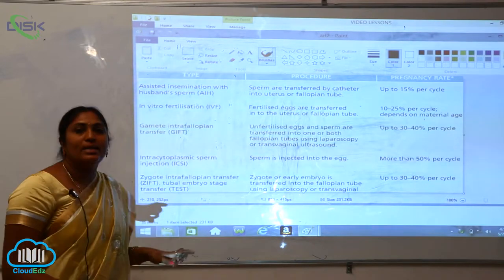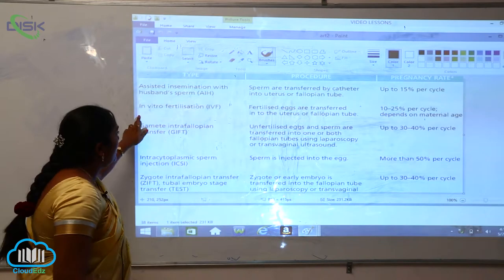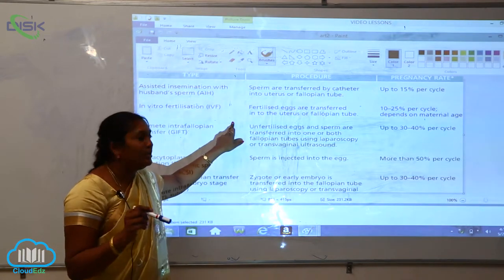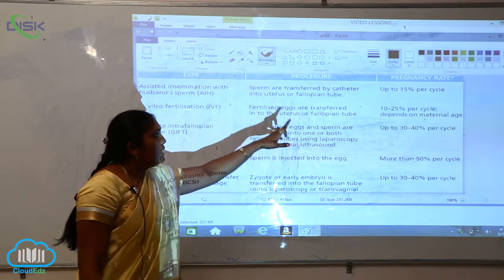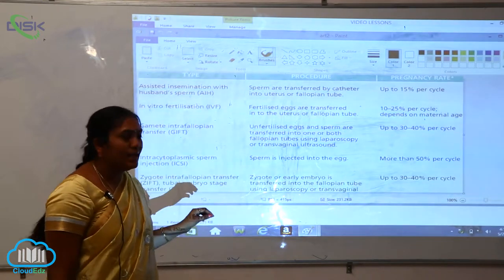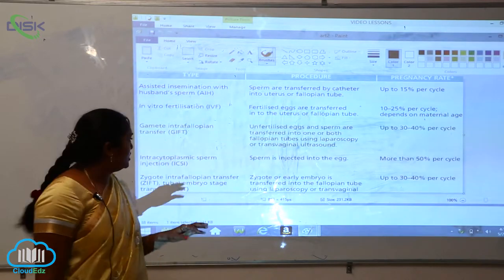Next is in vitro fertilization, IVF. Here the fertilized eggs are transferred into the uterus or the fallopian tube. The pregnancy rate will be 10 to 25 percent per cycle, which depends on the maternal age.